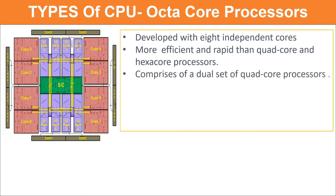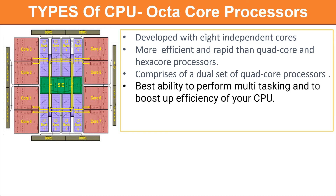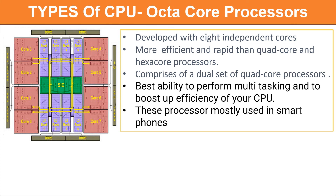Octa core processors comprise a dual set of quad core processors. They have the best ability to perform multitasking and to boost up the efficiency of your CPU. These processors are mostly used in smartphones.